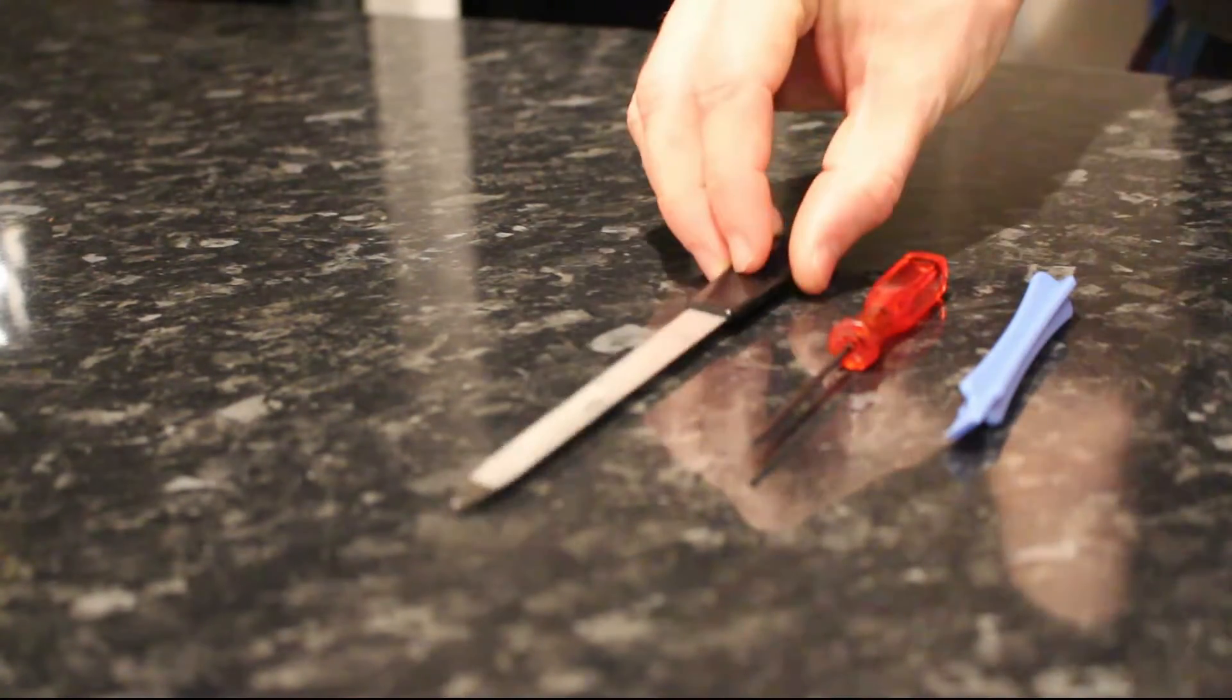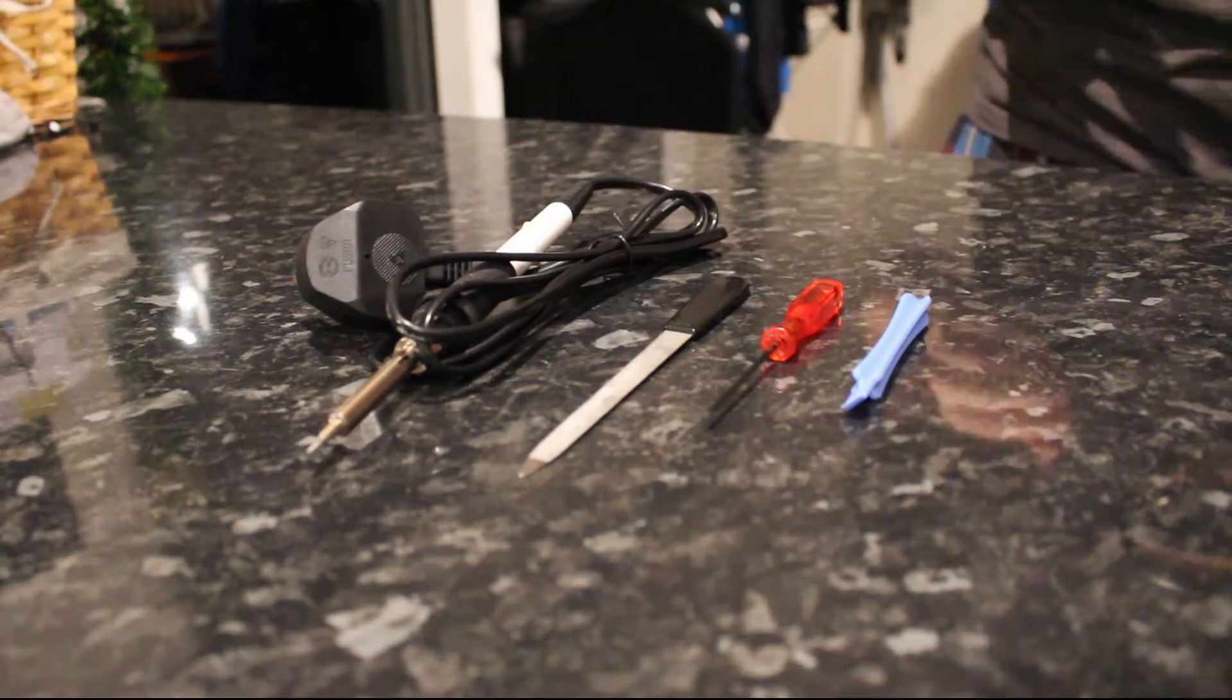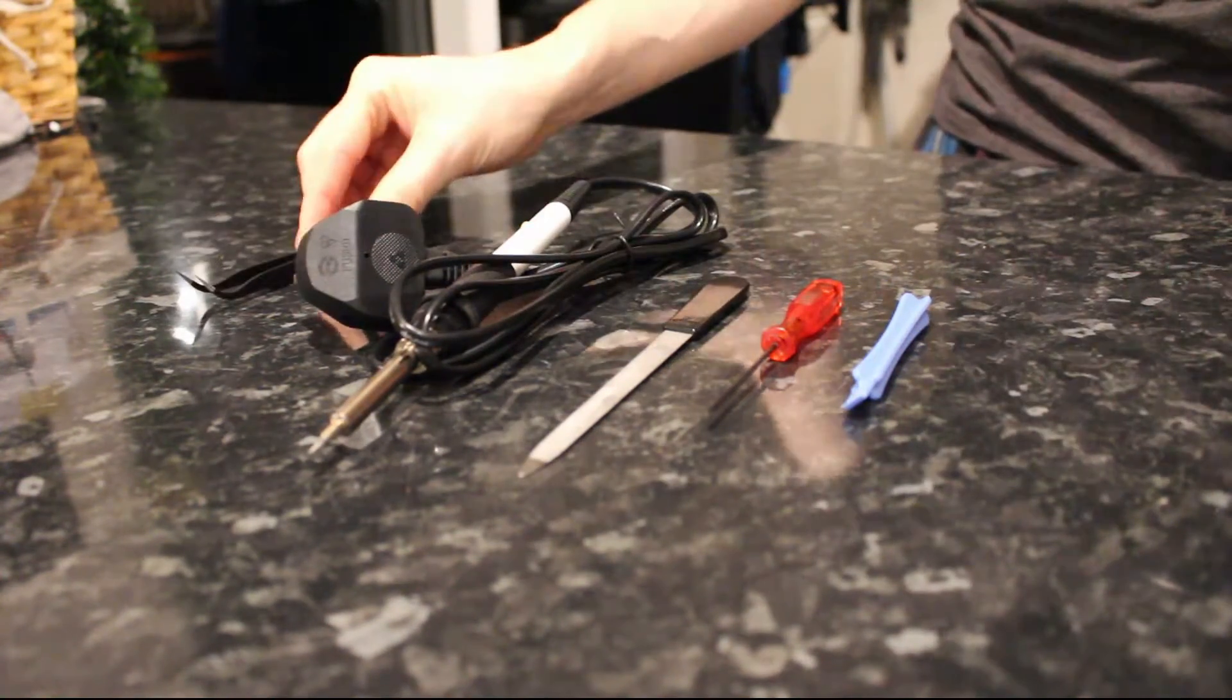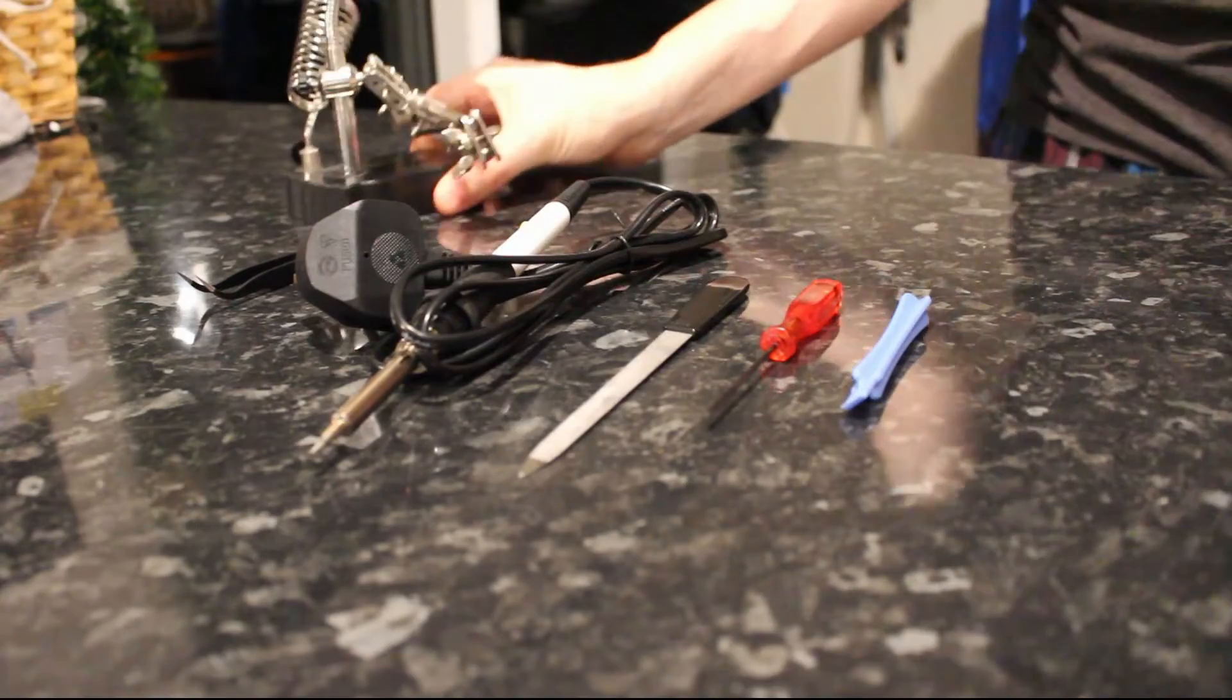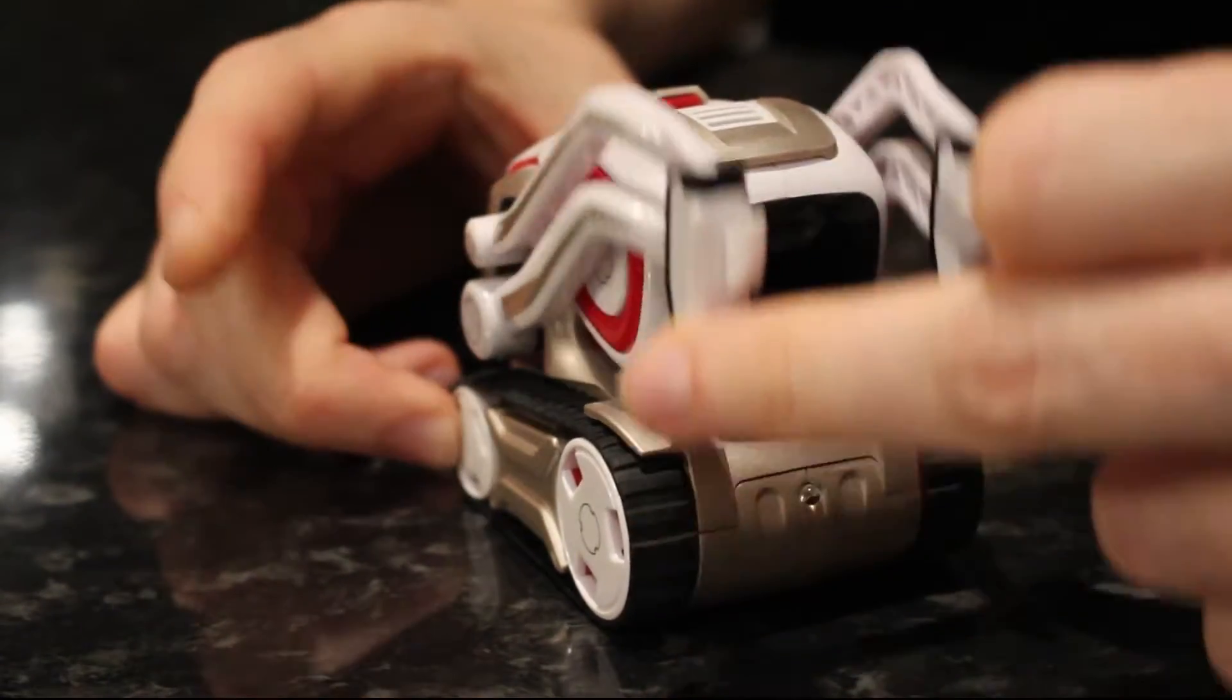So what you need to do to complete this is a spudger, a small Phillips head screwdriver, a nail file, a soldering iron with a precision tip, some precision tweezers and a set of helping hands. And we're going to start breaking this unit down.